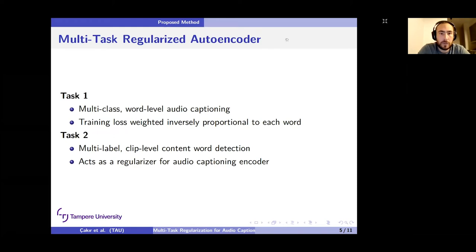Back to our proposed method. We are basically trying to solve two different tasks. The first task will be this multi-class word level audio captioning. There will be the time axis involved in this task, and for each time step, we will be trying to find the word that's present. One additional method that we employ here is to introduce weights for each of the words inversely proportional to their frequency. So we're trying to boost the weight of the words that are less commonly found in our datasets, which are most likely content words, and try to deemphasize the function words' effect in our training loss.